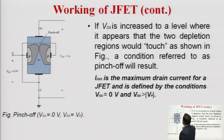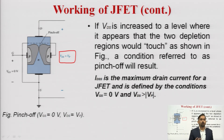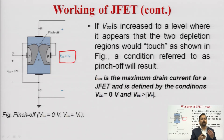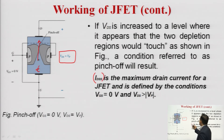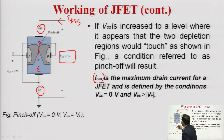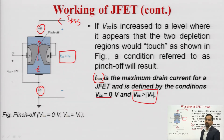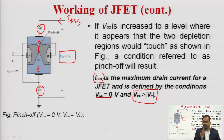At VDS equal to VP, where VP is the pinch-off voltage, the channel becomes pinched off. If we further increase VDS beyond VP, the current will not increase because electrons in the lower half cannot find a path to move toward the drain terminal. As a result, the current attains a saturated value IDSS, which is the drain-to-source saturation current — a constant value. When VGS is 0 and VDS is greater than or equal to VP, this is the pinch-off point where both depletion regions touch each other.